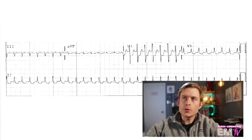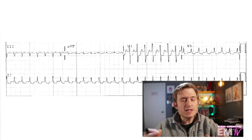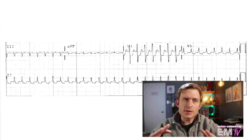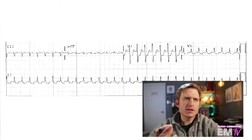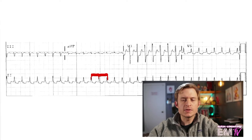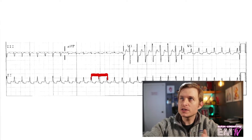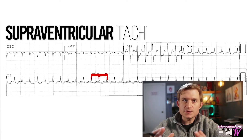Next I'll look for P waves. In this particular rhythm, I'm not seeing a definitive-looking P wave — it's sort of like an amalgamated P-slash-T wave. Beyond that, I'll look at the R-to-R interval. The R-to-R interval here is very, very consistent — nice and regular. I'm also seeing that the QRS complex is fairly narrow. With this criteria in mind, I'm going to diagnose this rhythm as SVT.